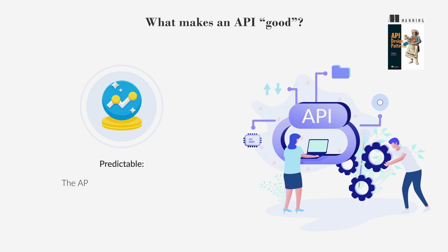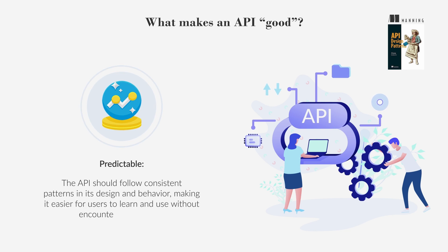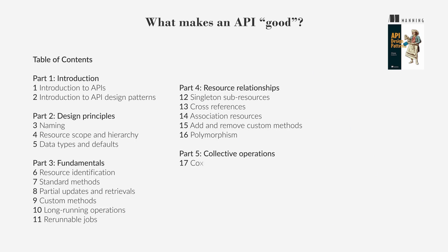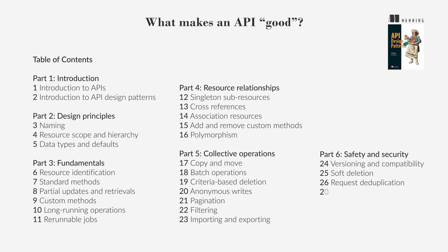Predictable: the API should follow consistent patterns in its design and behavior, making it easier for users to learn and use without encountering surprises. This includes using consistent naming conventions and maintaining a coherent structure across different parts of the API. Now that you have a good grasp on APIs and what makes them good, the next step is to explore advanced design patterns to further improve API development.